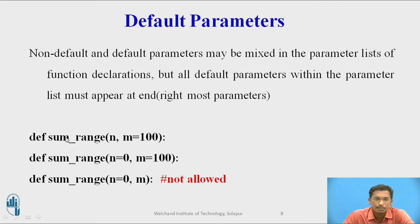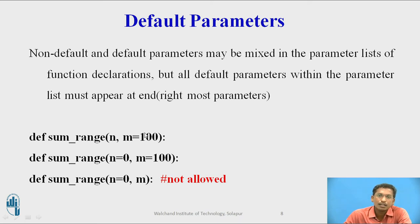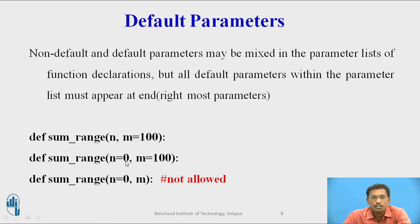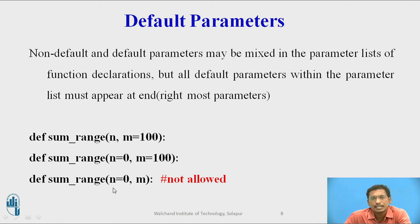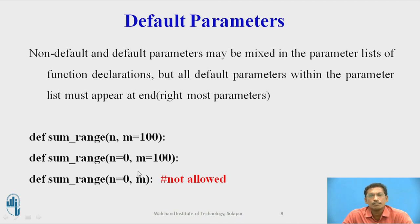In the second example: def some_range(n=0, m=100) — both are default arguments, which is fine. But in the third example: def some_range(n=0, m) — this is not allowed. There is only one default argument n, and it must appear on the right-hand side; placing it on the left-hand side is not allowed. So the rule of default parameters is: default arguments must always be at the right-hand side.